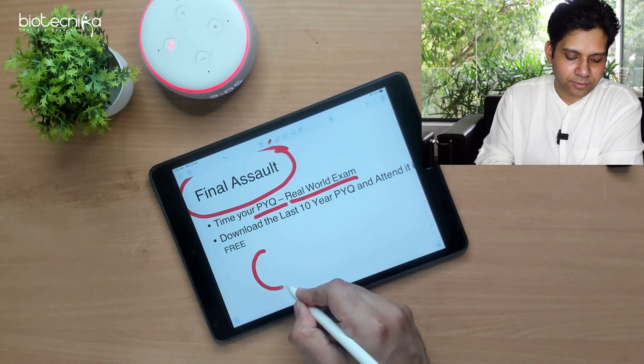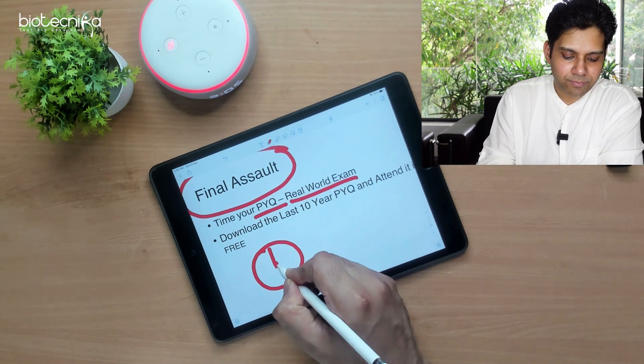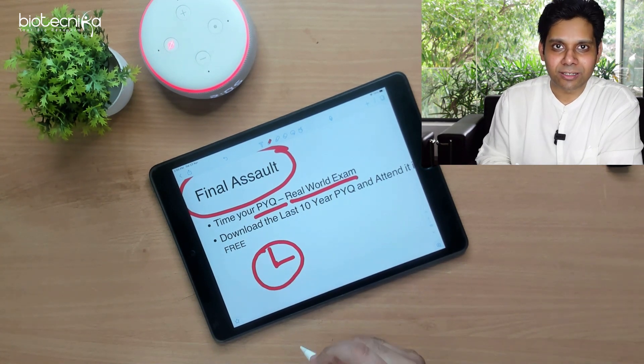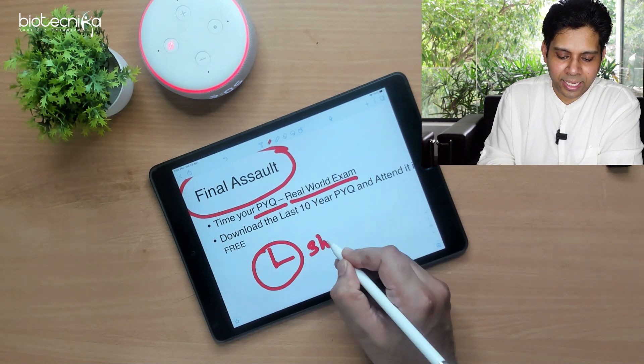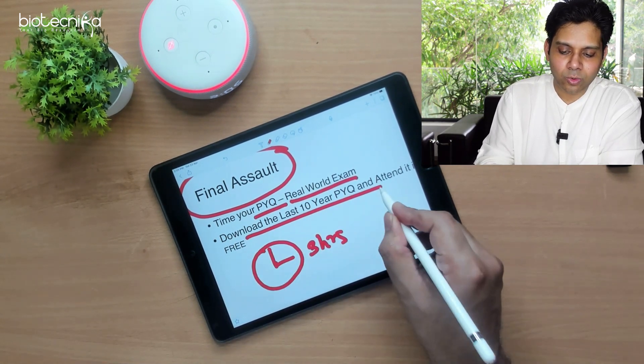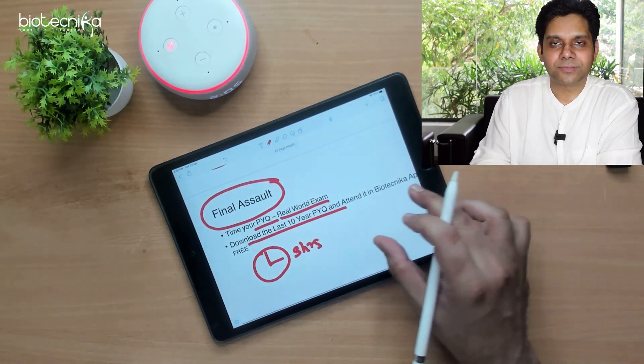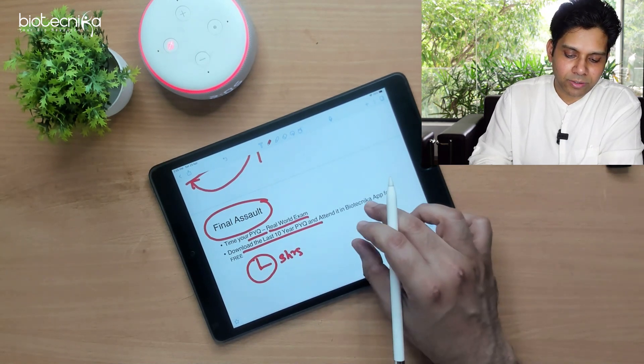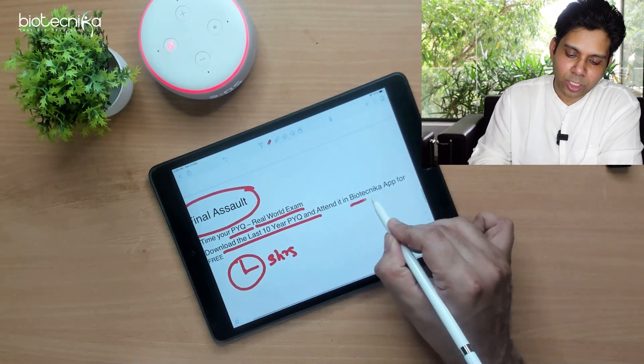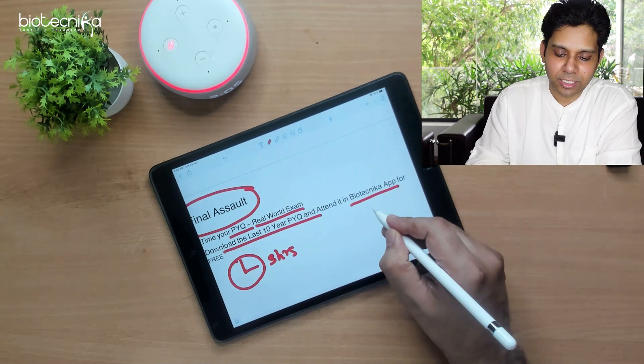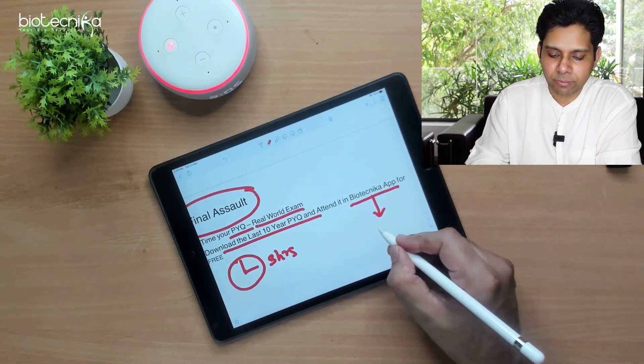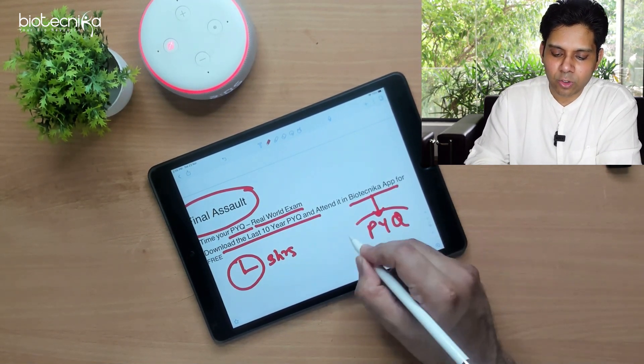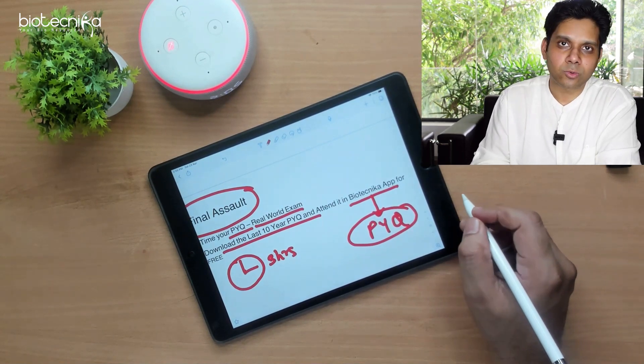Print it after the real-world exam. It means that you have to make a clock. Make a clock, put a stopwatch on your mobile, and put a 3 hours of time in it. And you will solve it. If you have to solve the previous question papers, you can do that also on the Biotechnica app. The link is in the description. You will get a free PYQ series where you can solve the last 5 to 10 years question papers.